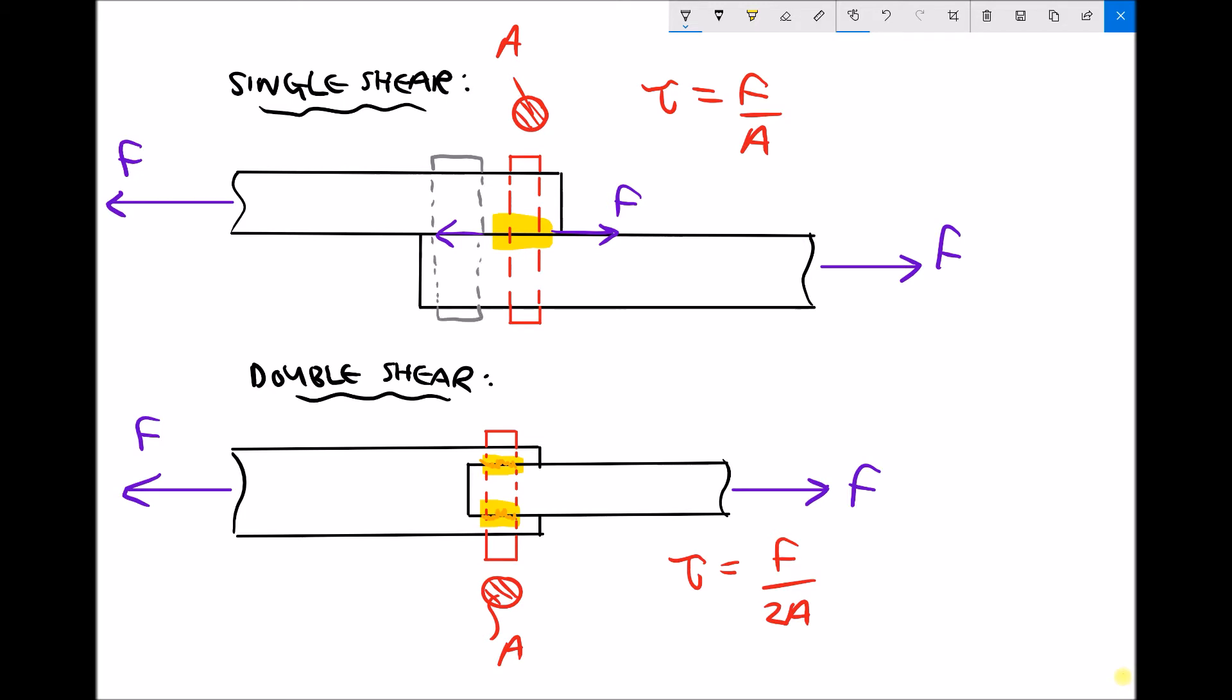Now I have deliberately drawn that with a different area, a larger cross sectional area. And the cross sectional area there I am going to call A2.